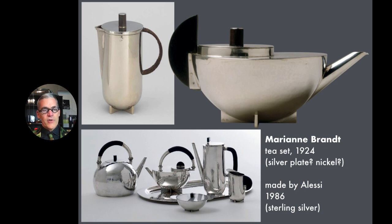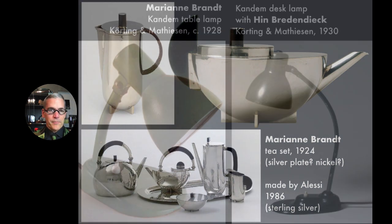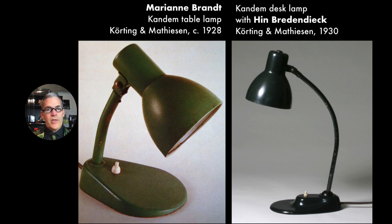In 1986, Alessi started producing versions of the tea set in sterling silver, not even interested in saving money by plating over a less expensive metal — because it was really the Marian Brandt-Bauhaus connection and how few of these there were in the world that made them conceptually valuable in a way that price didn't matter anymore. Today, Technolumen is making a silver-plated brass version and selling it for $6,000. We don't even care if it's sterling silver — the value is the fetish status, the Marianne Brandt and Bauhaus connection more than anything.